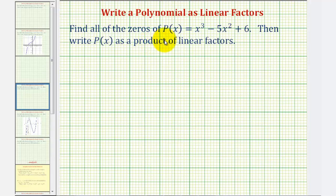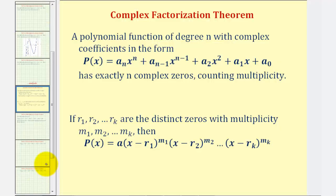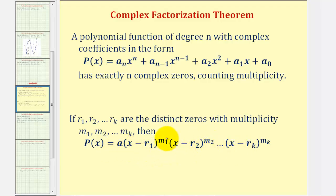We want to find all the zeros of the polynomial function and then write the polynomial as a product of linear factors. For a quick review from the complex factorization theorem, a degree n polynomial function has exactly n complex zeros, as long as we count multiplicity. So if we find all the complex zeros, we can write the polynomial function as a product of linear factors, where the r's are the zeros, the exponents m are the multiplicity, and a is the leading coefficient.